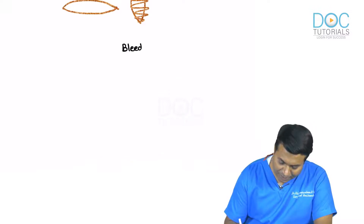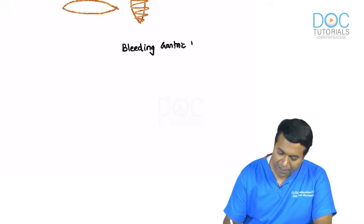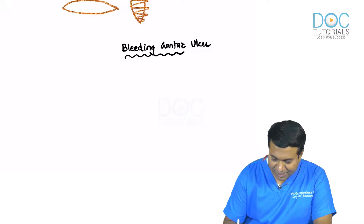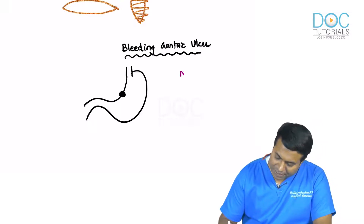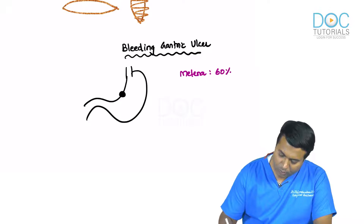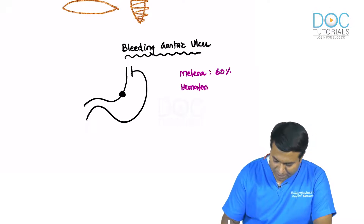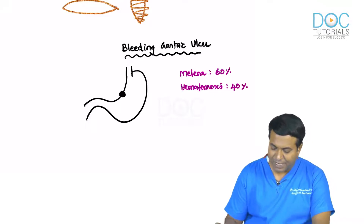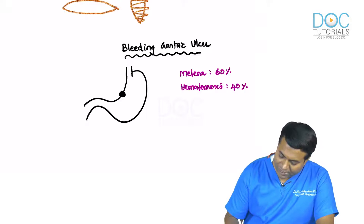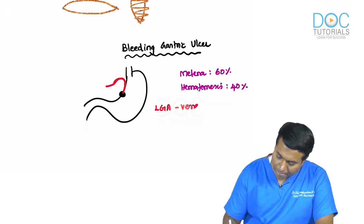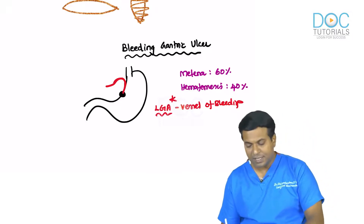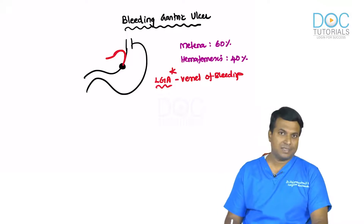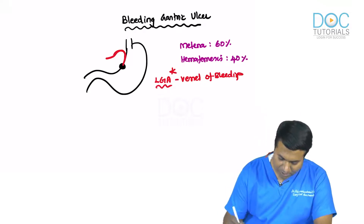Bleeding gastric ulcer is much less common than duodenal ulcer. When it occurs, it presents with melena in 60% of patients and hematemesis in 40%. The most common vessel to bleed in gastric ulcer is the left gastric artery.